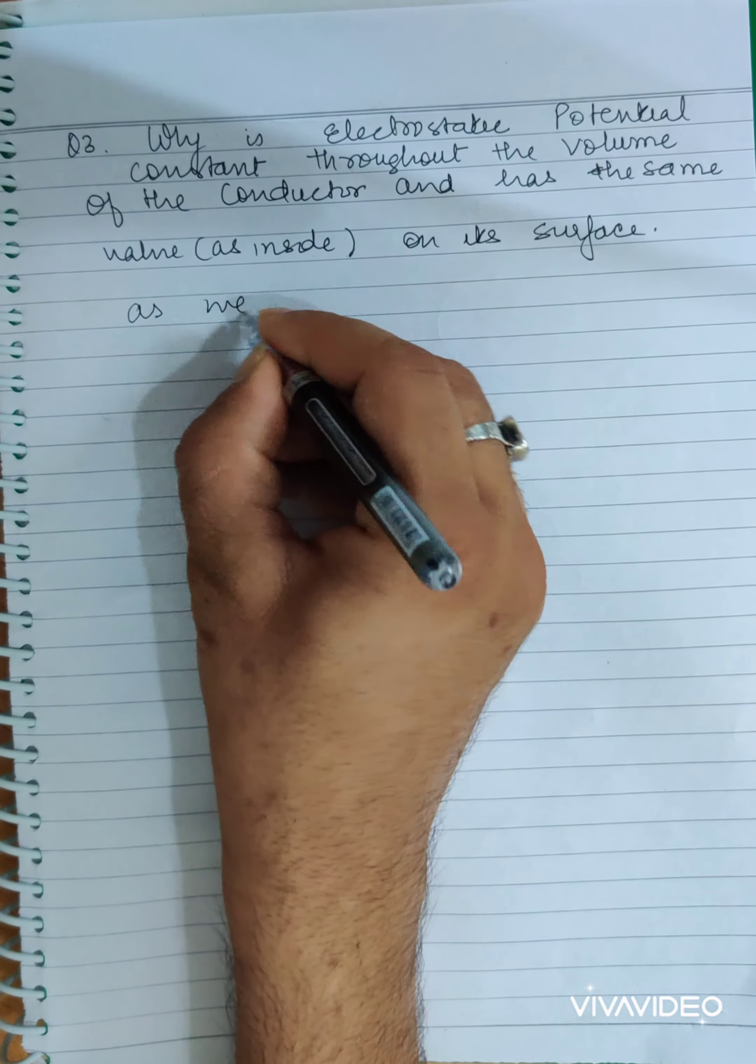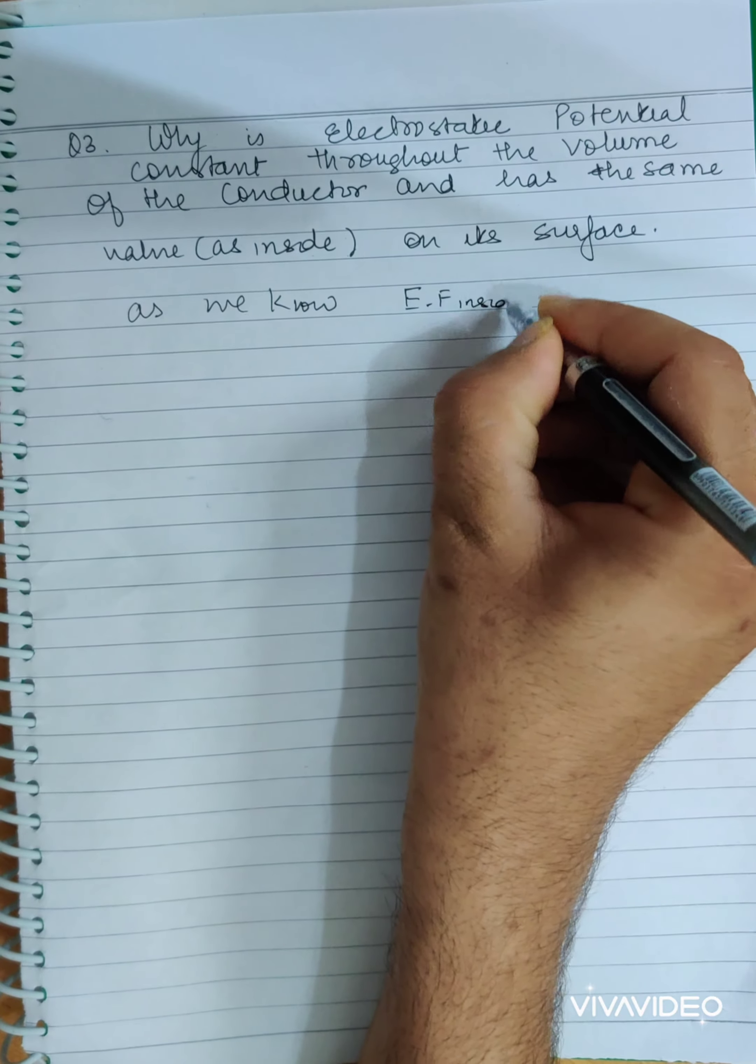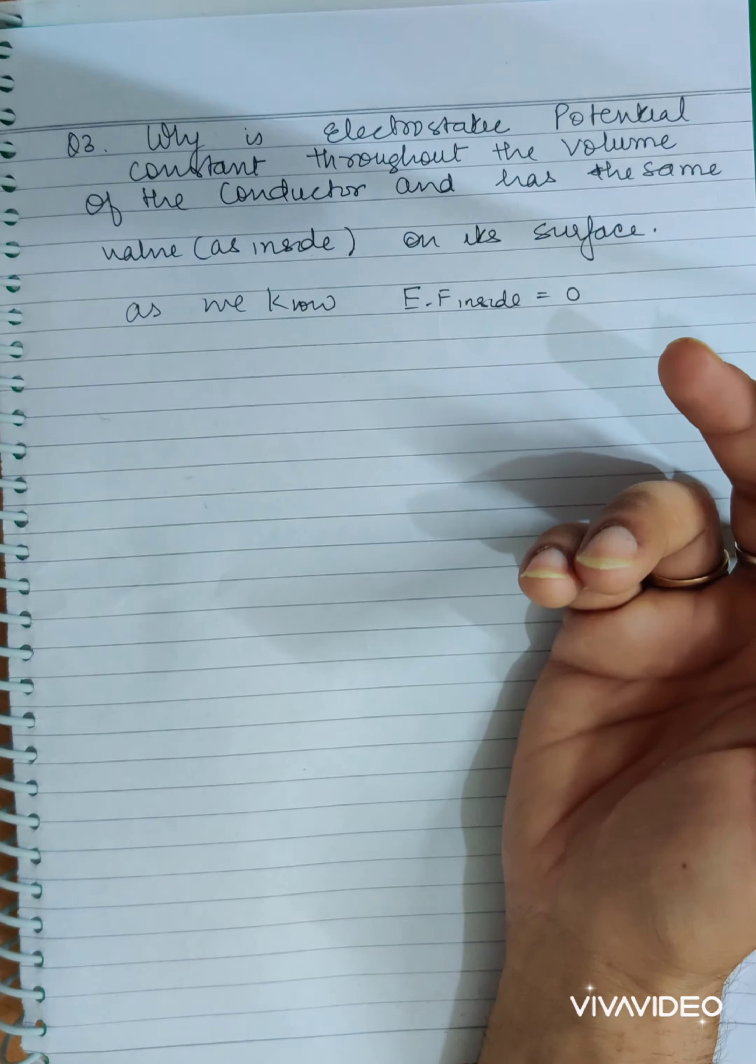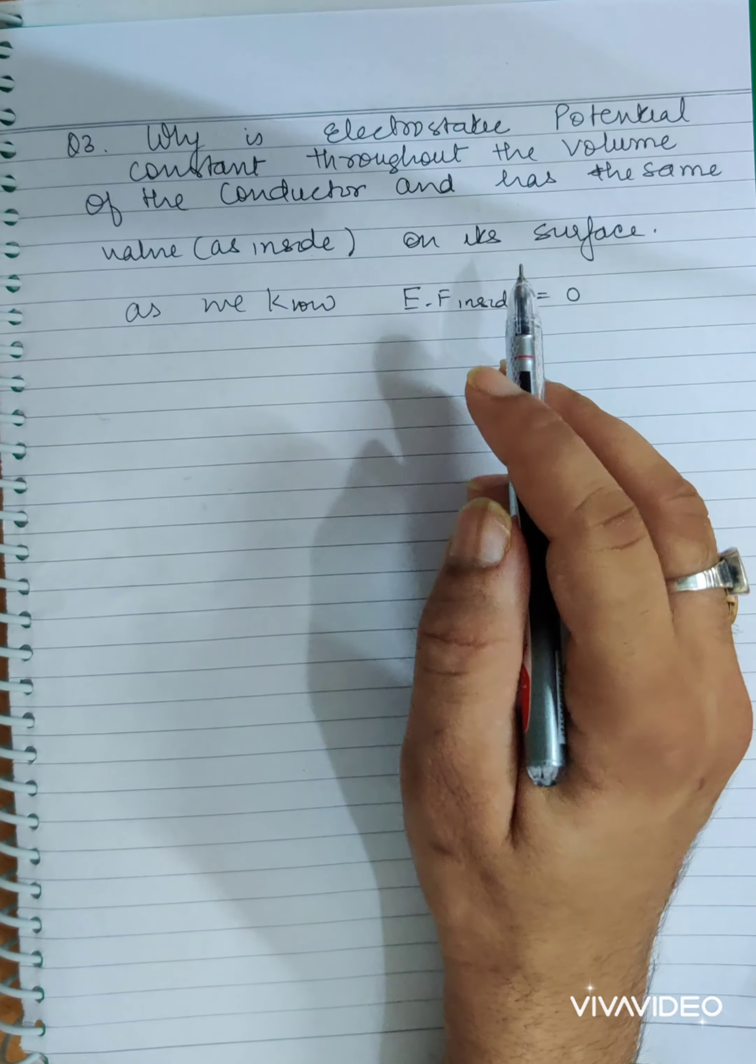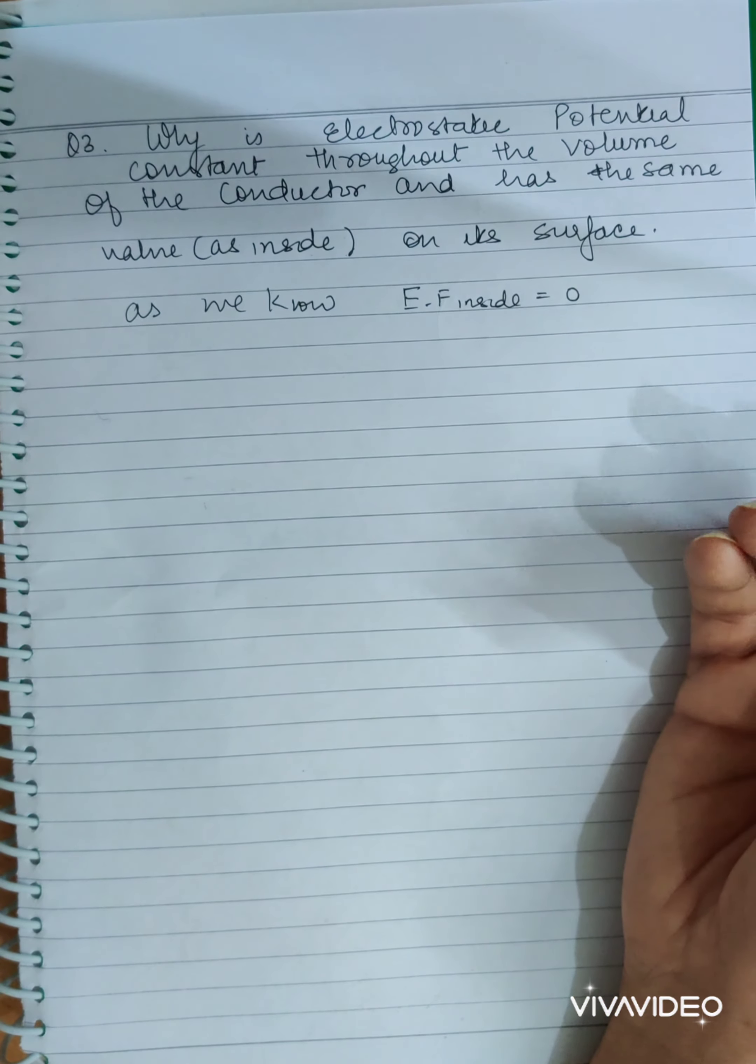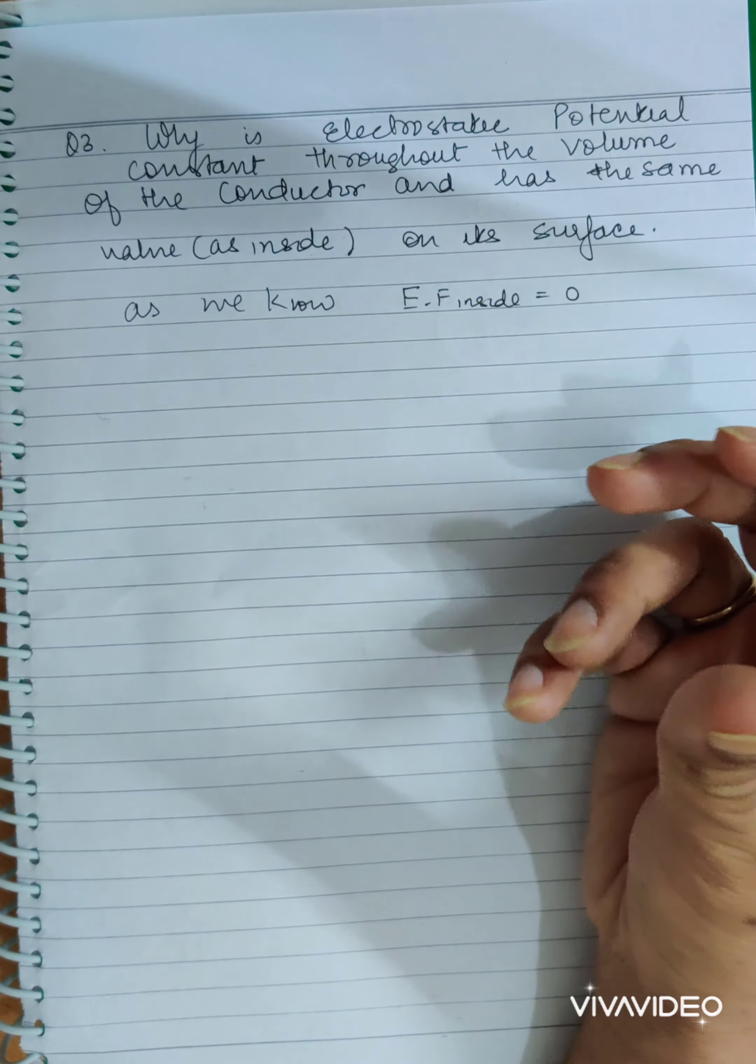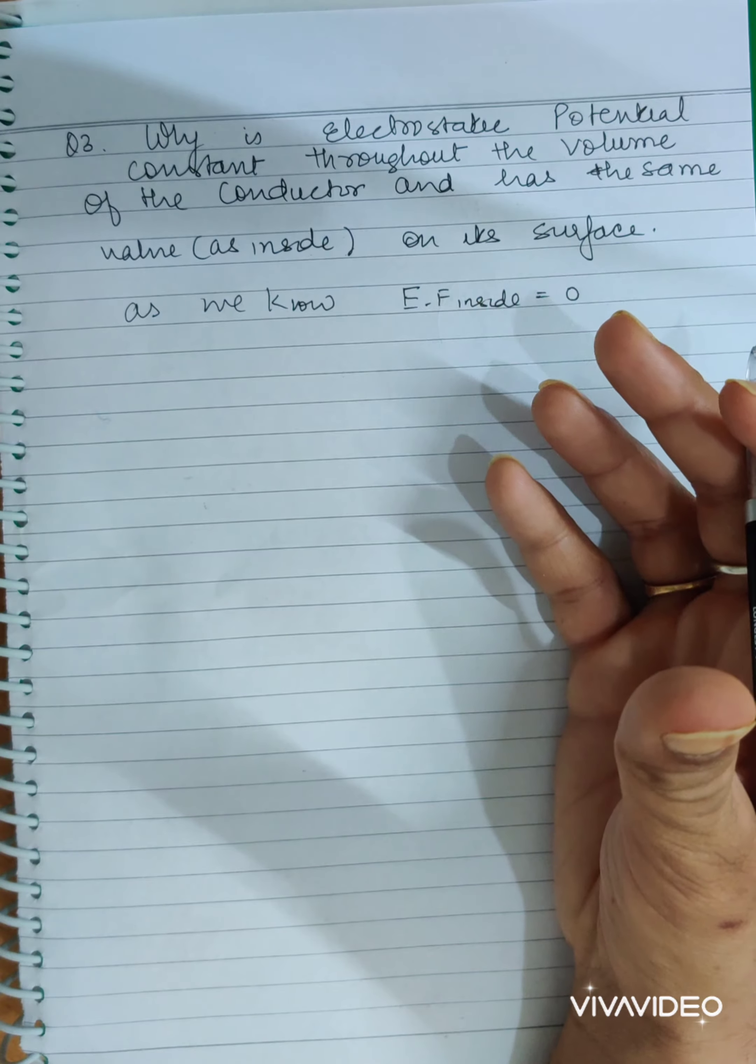As we know, the electric field inside a conductor is zero due to the non-existence of any net charge. Because of mutual repulsion, all the free charges will come onto the surface. Due to mutual repulsion, they repel and try to go as far away as possible, ending up on the surface.